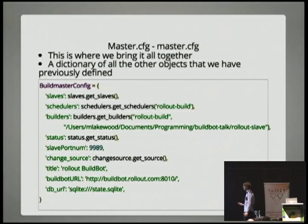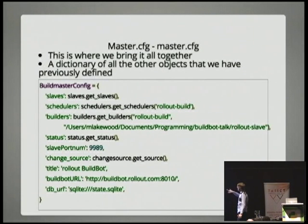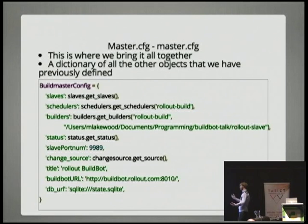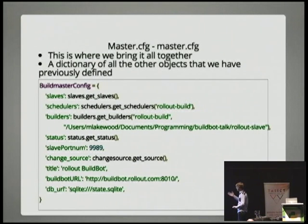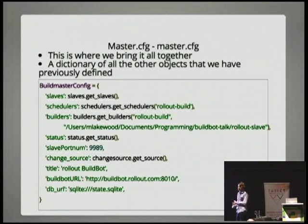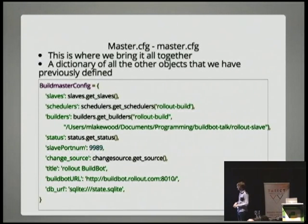This is where it really comes all together. You have a master.cfg file in your BuildBot server directory that you create using buildbot create. It's just a dictionary — that's all it requires. A dictionary with these keys in it, and you pass all of the objects and lists of objects back from all the other files. The slaves is just all of the slaves, schedulers are the schedulers, builders are the builders, status is the status, slave port number is where the slaves connect. Change source, title, BuildBot URL. The DB URL — you can put that in a Postgres database if you like. Otherwise, all the build information sits in a little SQLite database.